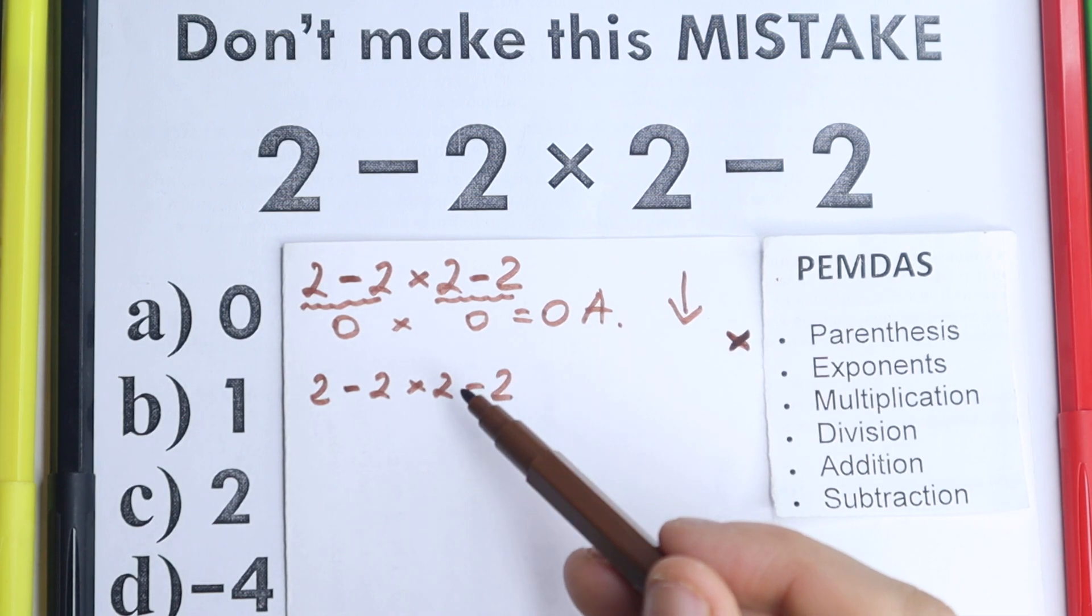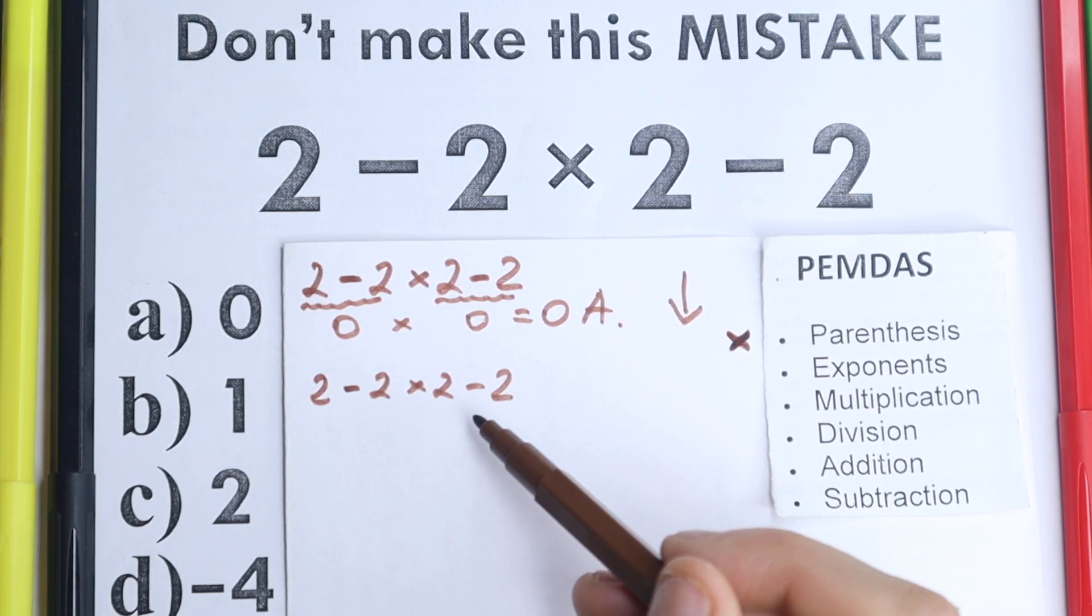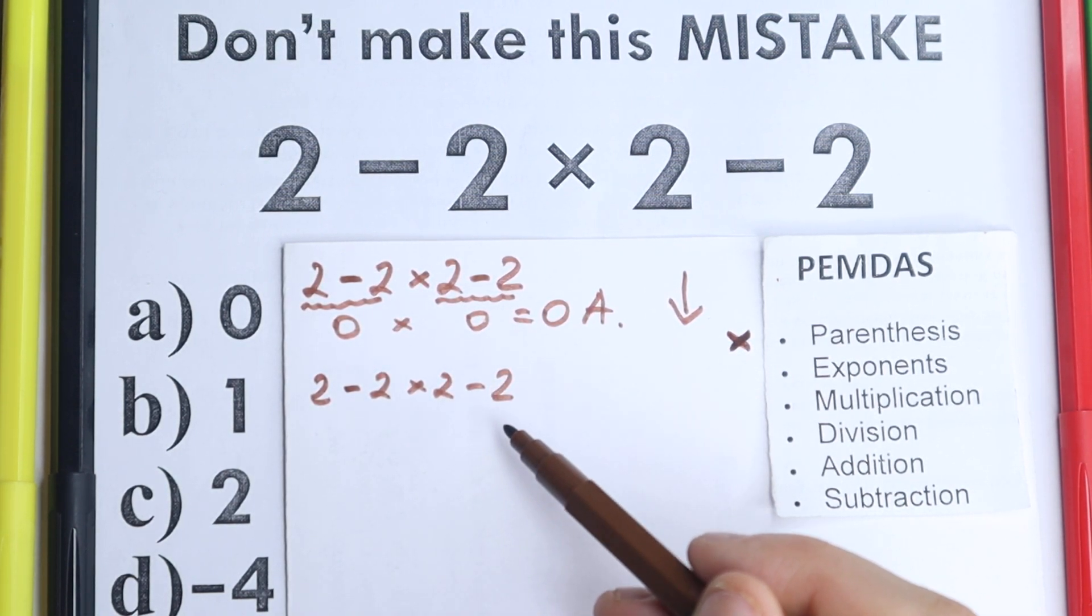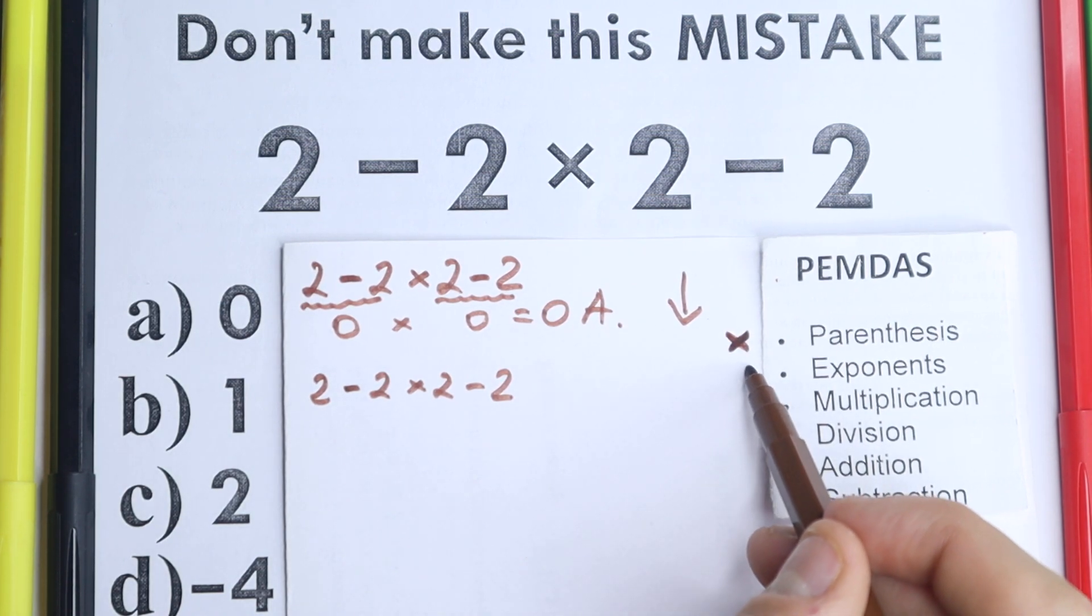What about exponents? Are there any exponents right here? Let's look at it, no squares, no cubes right here, which is really great, so we just go to the next step. We don't have any exponents.